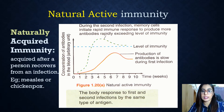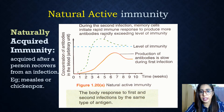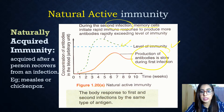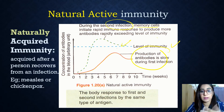Looking at the graph, during the first infection the production of antibodies is quite slow and doesn't even exceed the immunity level. But during the second infection, the memory cells initiate a rapid immune response to produce more antibodies rapidly, which will exceed the immunity level. That's why it's called naturally acquired active immunity — the antibodies are produced by the body naturally.